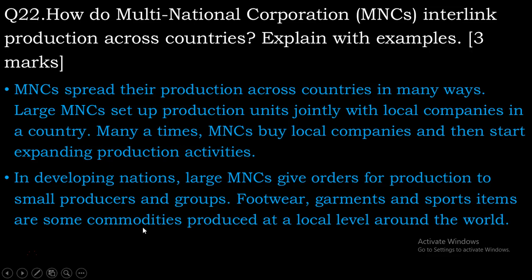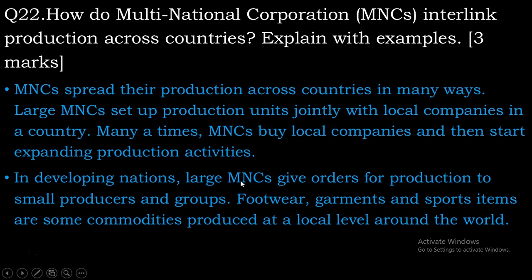In developing nations, large MNCs give orders for production to small producers and groups. Footwear, garments and sports items are some commodities produced at a local level around the world. Developing countries jaise South Africa, India, Bangladesh, Philippines — in developing countries mein jo badi badi MNCs hoti hai, woh apne production ke liye in developing nations ke chhote producers ko, unke groups ko order deti hai — footwear banayenge, garments banayenge, sports items banayenge. Phir yeh sab jab taiyar ho jaata hai, inhi sab pe label lag jaata hai MNCs ka, aur yeh local level pe apni commodities produce karwa paate hai puri duniya mein kahin bhi.